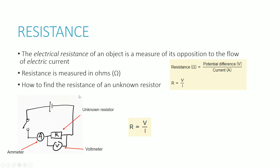If we had an unknown resistor and wanted to find its resistance, we connect the resistor in a circuit with a voltmeter to measure the potential difference across the resistor, and an ammeter to measure the current flowing through the circuit. If we close the switch and connect the circuit, the voltmeter gives a reading of the potential difference and the ammeter gives a reading of the current. Putting those into the formula R equals V divided by I gives us the resistance of the unknown resistor.